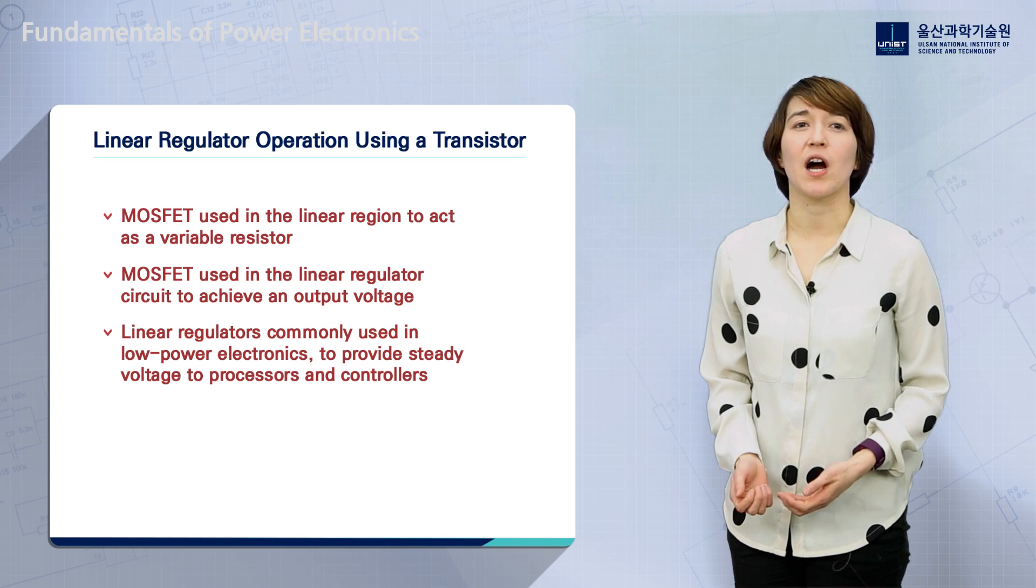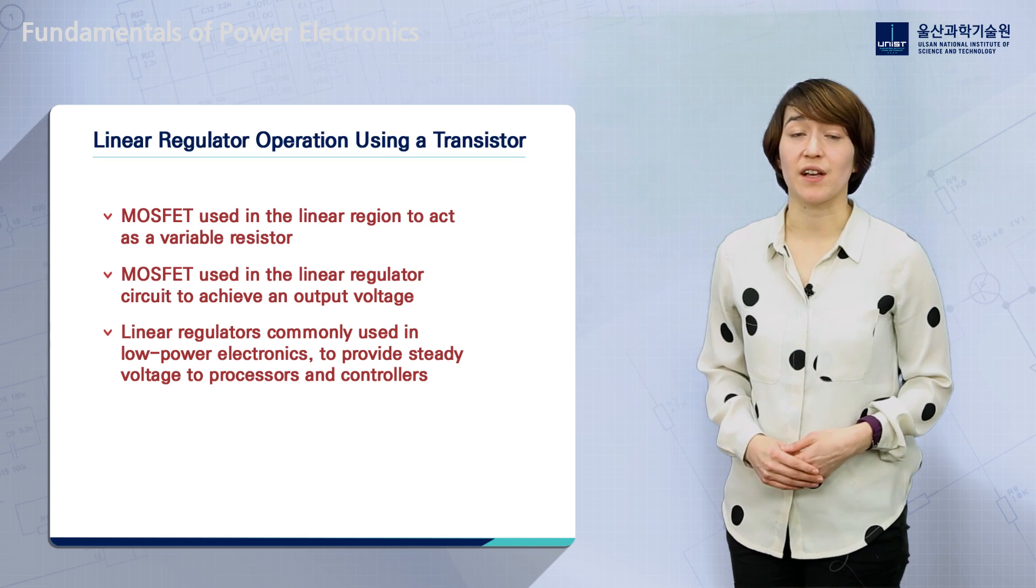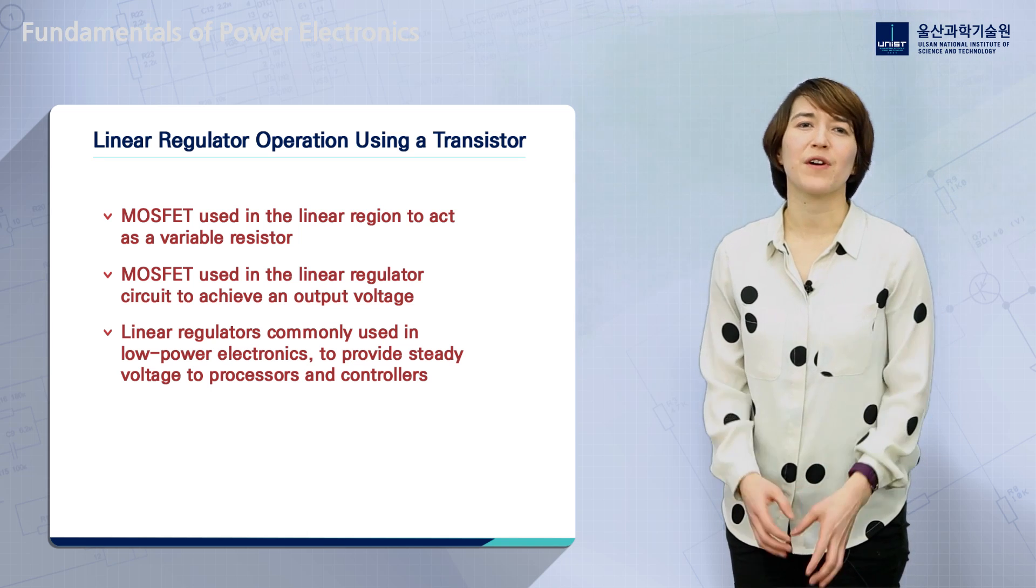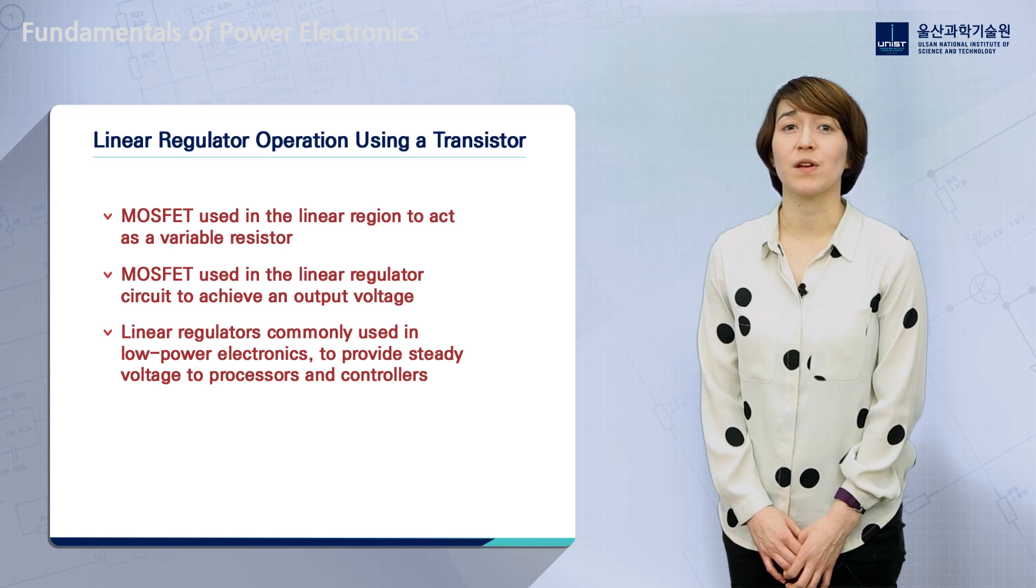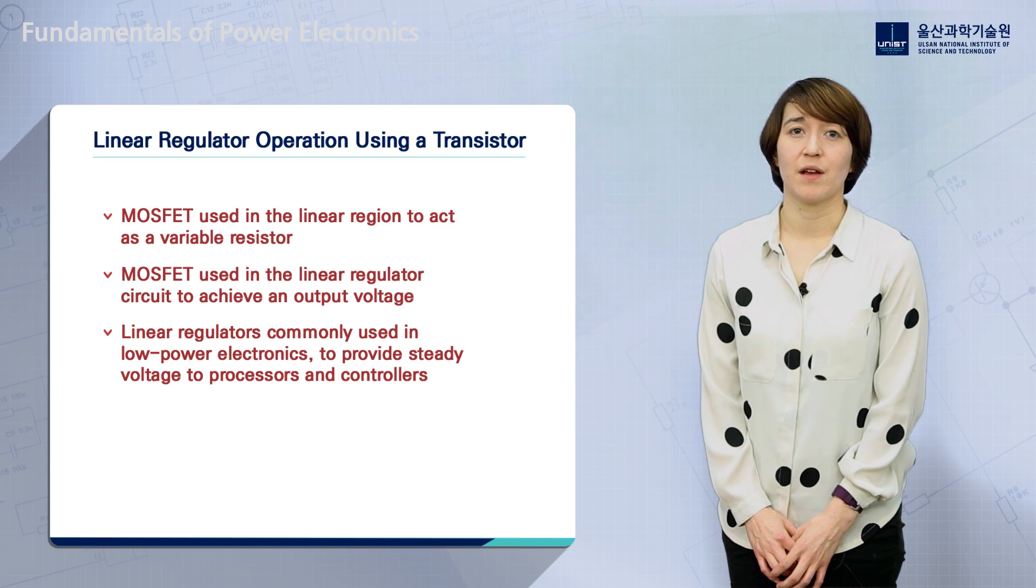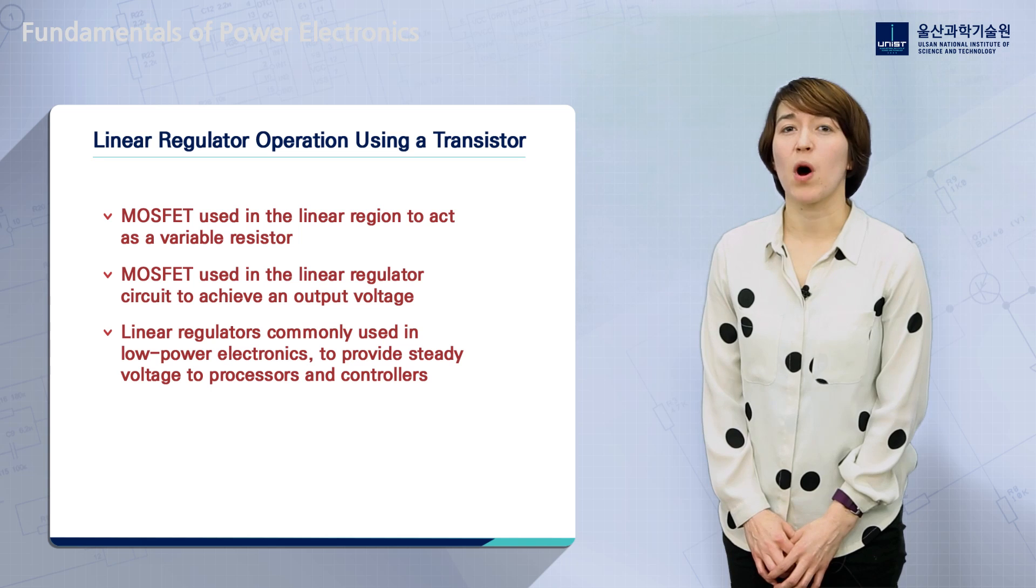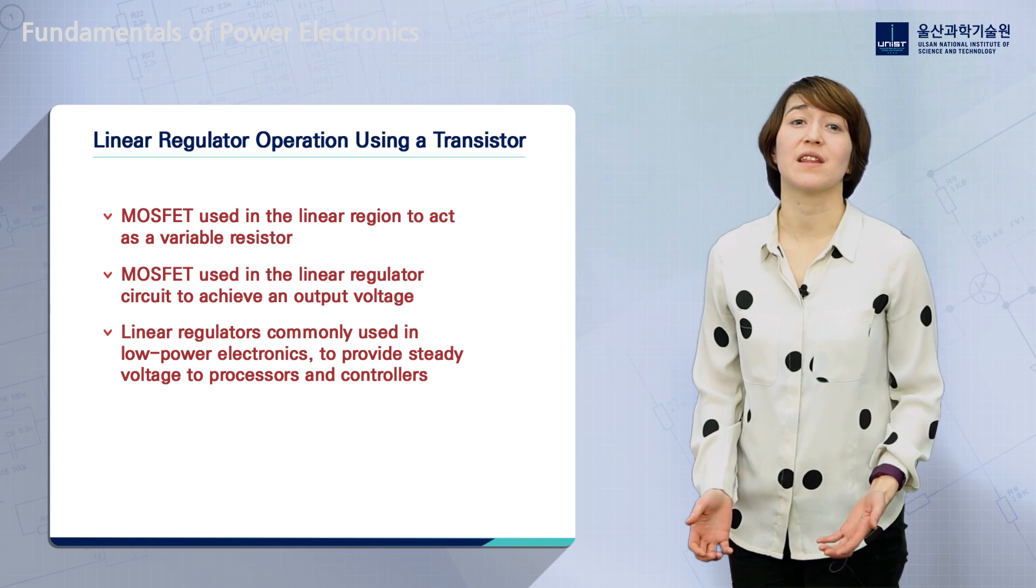Linear regulators are commonly used in low-power electronics. For example, you'll find linear regulators in most portable electronics, providing a steady voltage to small processors or controllers in the device.